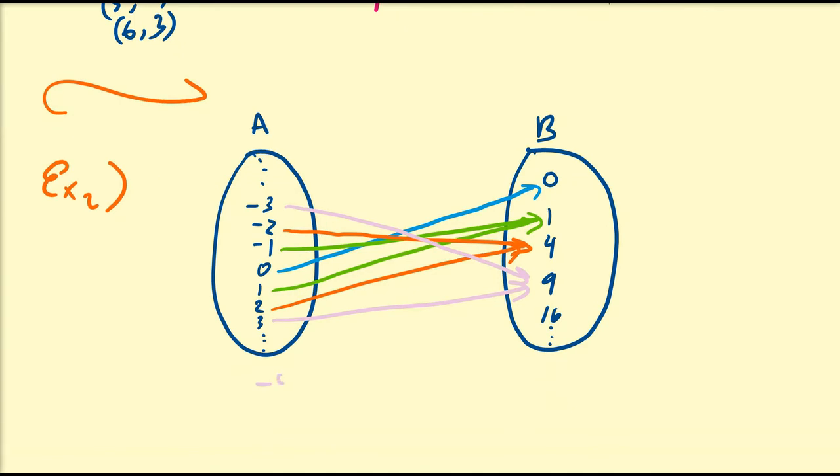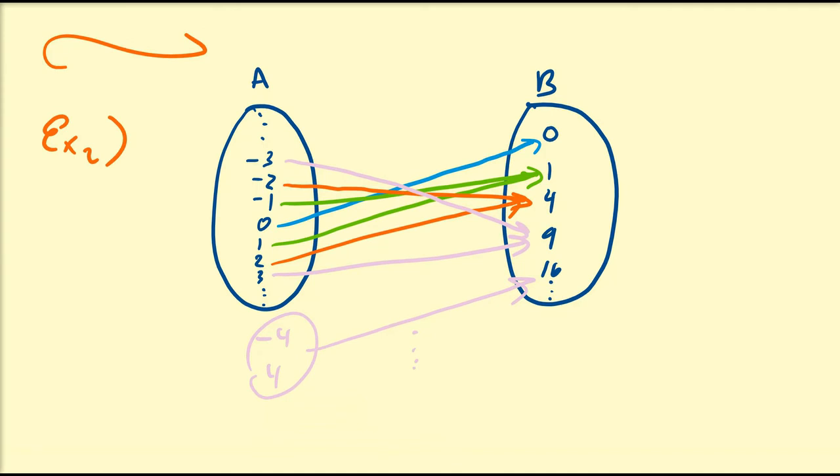And of course, we have negative 4 and 4. Both of them are going to be mapped to 16, and so on. So you have an idea of the relationship between these two sets, right? So if x belongs to A and y belongs to B, then we have a rule that y is equal to x times x or y is equal to x squared. So this is the rule.